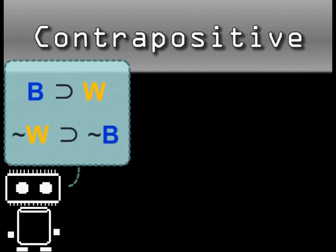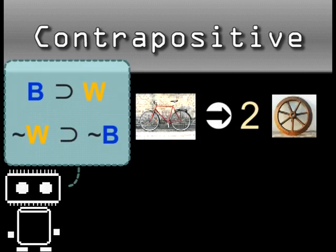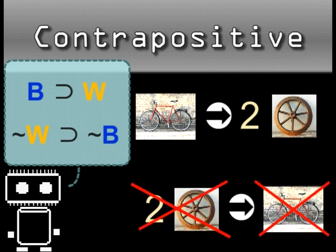For our original statement, if it's a bike, then it has two wheels. The contrapositive is, if it's not two-wheeled, then it's not a bike. Looks like that's true, so long as the original was.